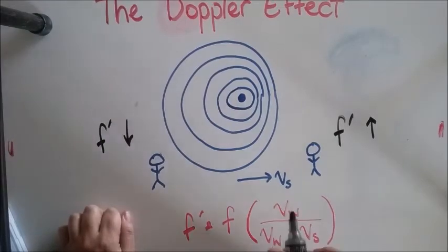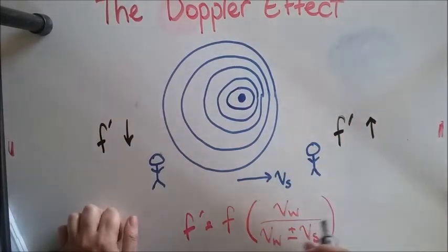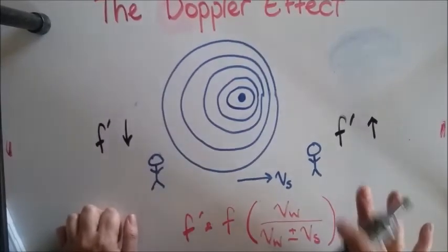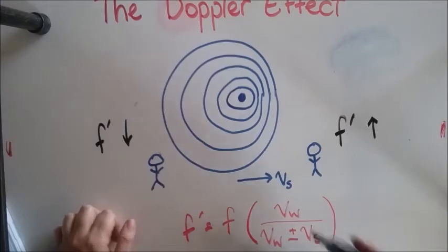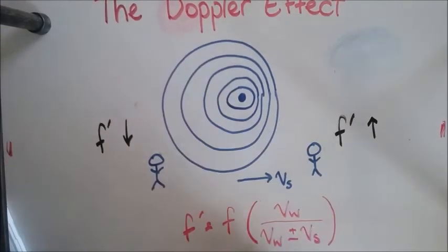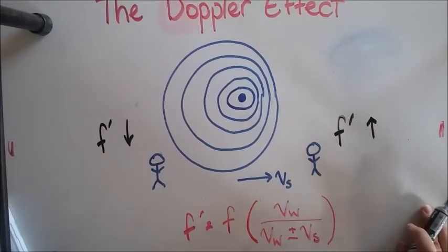But the question is by how much? And it turns out—I'll do the derivation in class if you're very interested—it turns out that it's a ratio of the speed of the wave and the difference between essentially the speed of the wave and the speed of the sound.